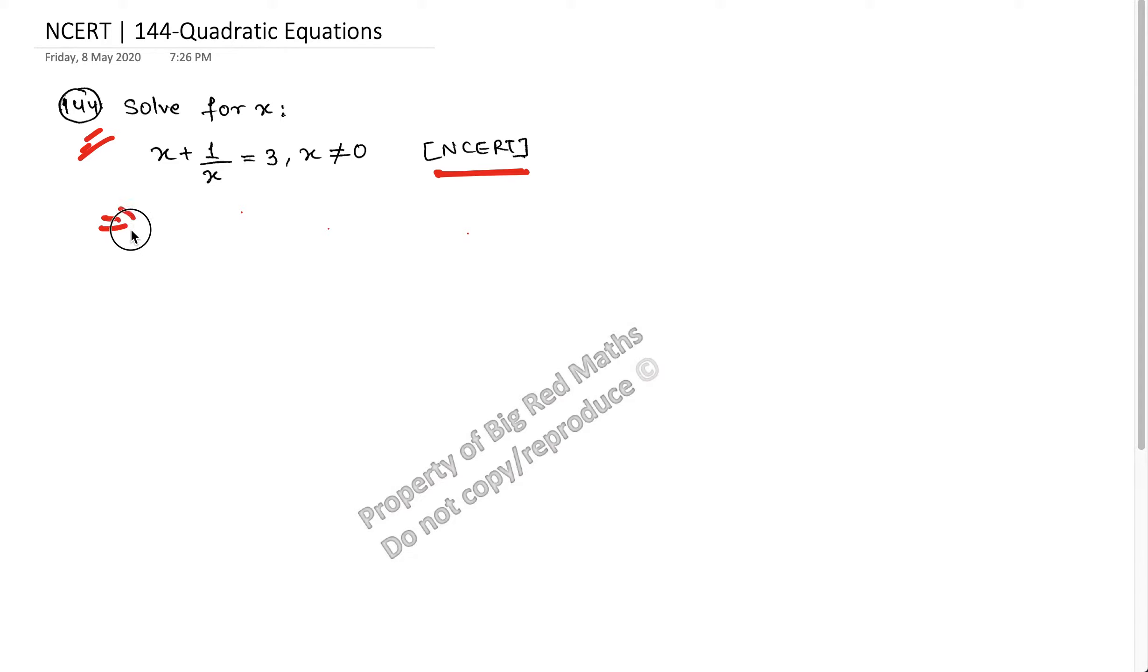Multiplying the entire equation by x, we get x squared plus 1 equals 3x. Moving 3x to the left hand side, we get x squared minus 3x plus 1 equals 0.